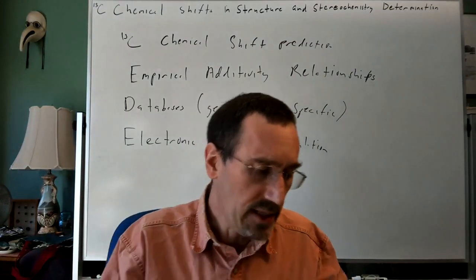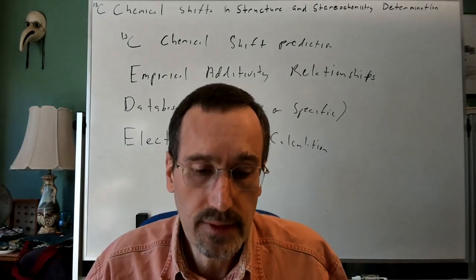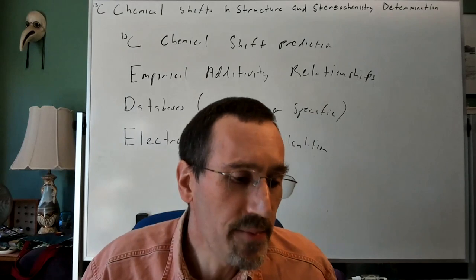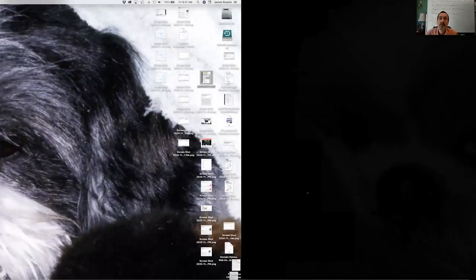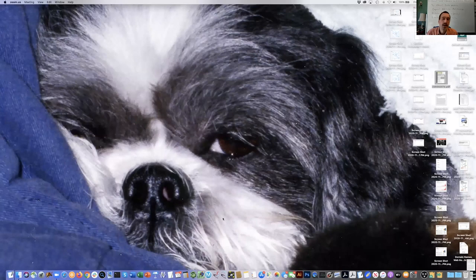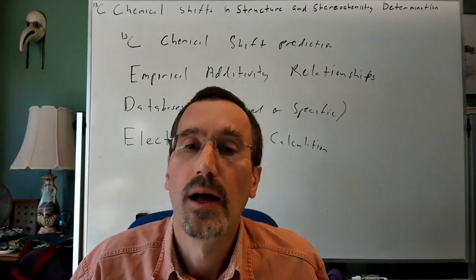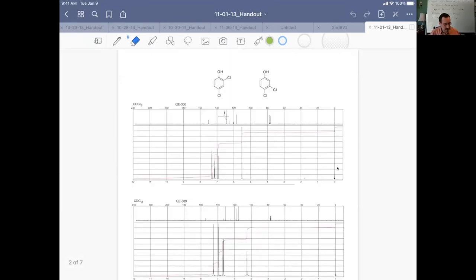Let me direct us to the handouts now. The second page of the handout shows two spectra I took from Aldrich — both are isomers of dichlorophenol, and both are 1,2,4-trisubstituted aromatics.